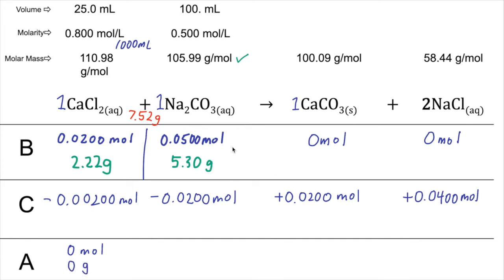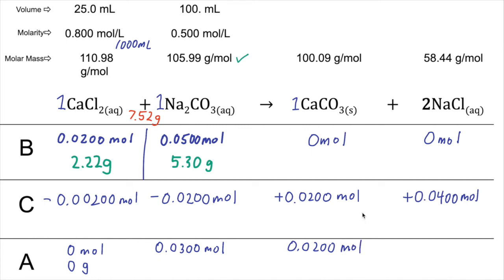For sodium carbonate, we started with 0.0500 moles; only 0.0200 moles reacted, leaving 0.0300 moles as the excess reactant. On the product side, we start with 0 moles and produce the amounts listed on the change line, giving us 0.0200 moles of calcium carbonate — the solid precipitate we collect — and 0.0400 moles of sodium chloride, which remains aqueous.